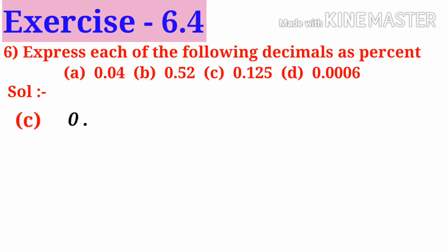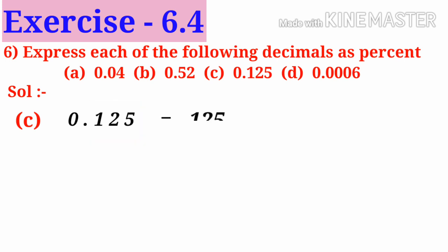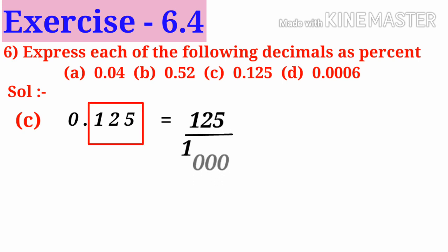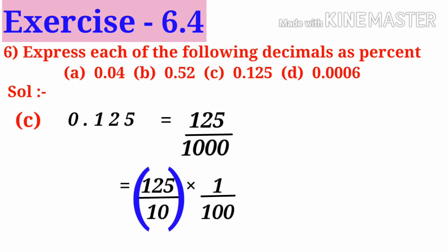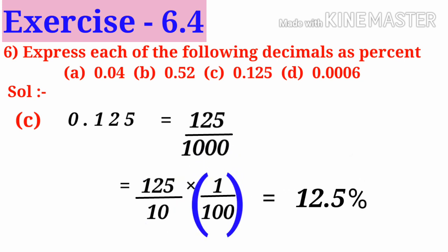C: 0.125. Observe that there are non-zero numbers 125, so write 125 in the numerator. Observe that there are three decimal places, so add three zeros after 1 in the denominator, that is 125 by 1000. This can be written as 125 by 10 into 1 by 100. Now 125 by 10 is 12.5, and 1 by 100 is denoted by percent, so 12.5 percent.